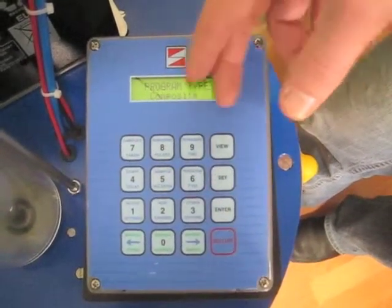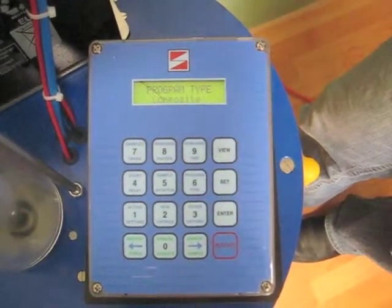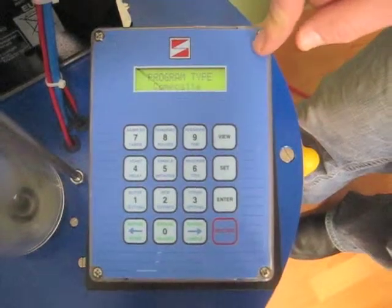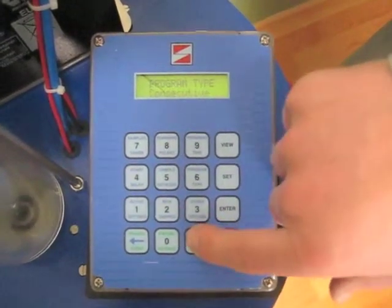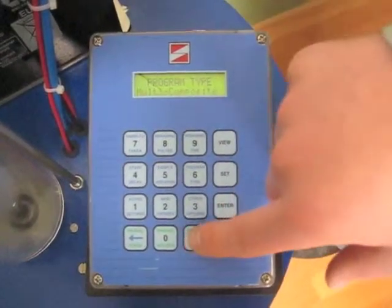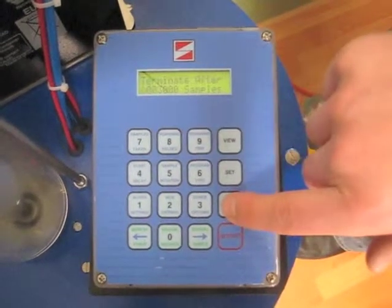Program type is quite straightforward. Do you want composite? In other words, all of the samples in one jug. Or if you have a discrete system with multiple bottles, do you want the sample to go into those different bottles? And that's all we're doing here. You can do consecutive. Multi-composite is something where you're putting multiple samples into one bottle before moving on. Time step. And we'll leave it at composite in this case.